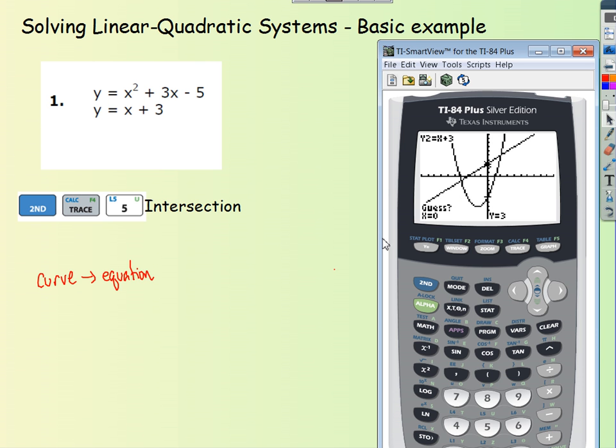Now at this point, the calculator is actually asking me to move myself, to move my cursor to the location of the intersection that I'm looking for. The one that I want them to tell me. So I kind of move myself over here. And I get pretty close.